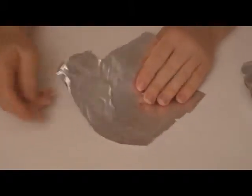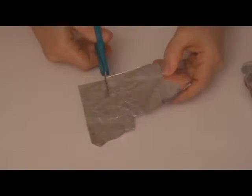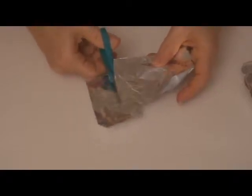Your first step is to take your piece of aluminum foil and fold it in half. You're then going to take your pair of scissors and cut a small strip from one of the ends.